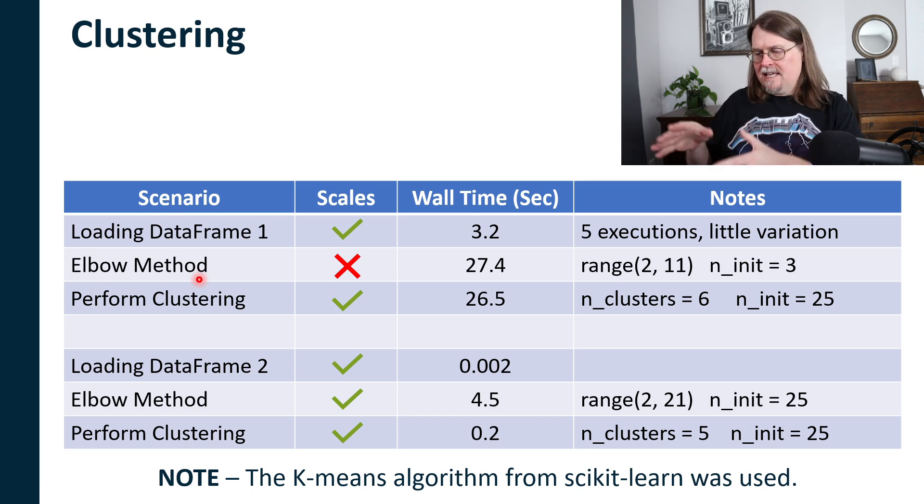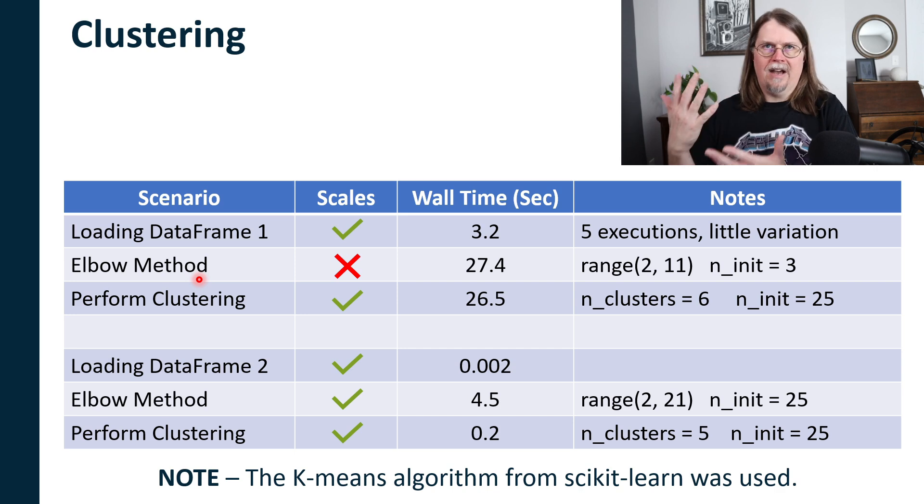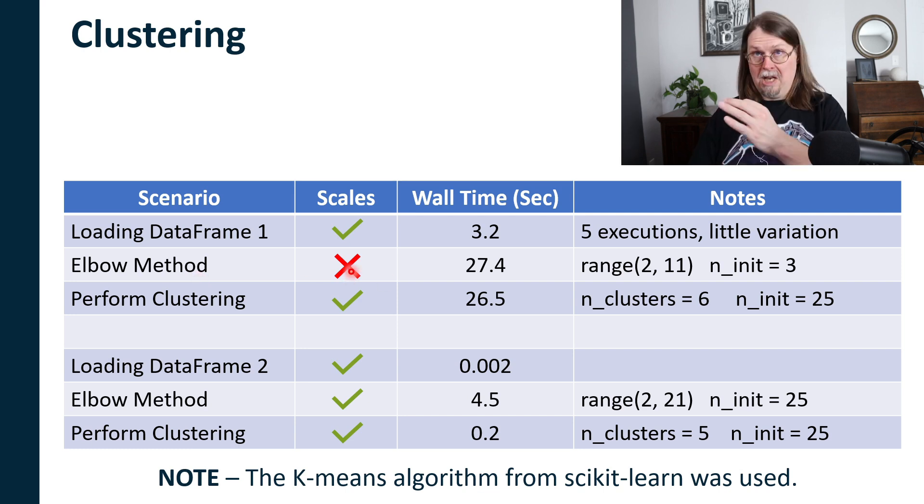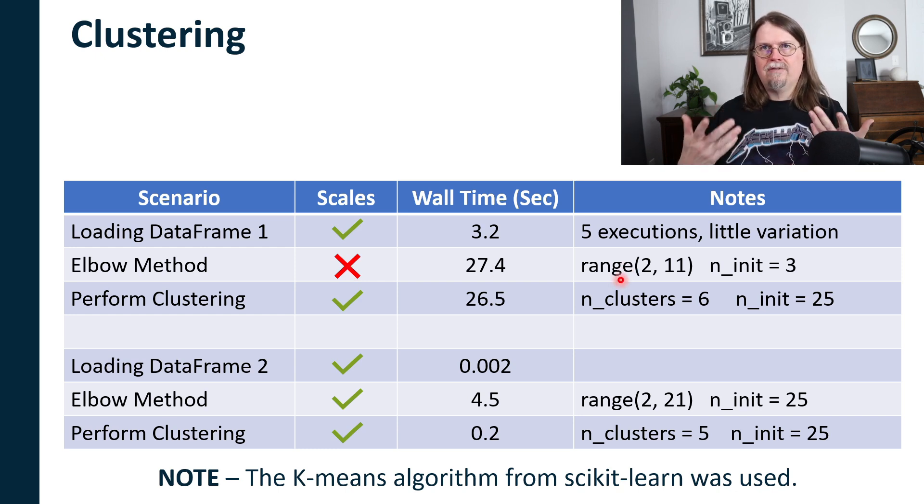Now, the elbow method is a technique, one technique for analyzing your data to say, how many clusters are reasonable for me to use? So K-means, you have to tell it how many clusters to find. Three clusters, four clusters, five clusters, whatever it might be. So the elbow method is a technique for doing that. And what we can see here is that I'm going to say this doesn't actually scale right now. In April 2024, this does not scale with Python or in Excel. And here's the reason why. So typically what you do is you try out a range of values when you do the elbow method. You look at two clusters, three clusters, four clusters, so on and so forth.